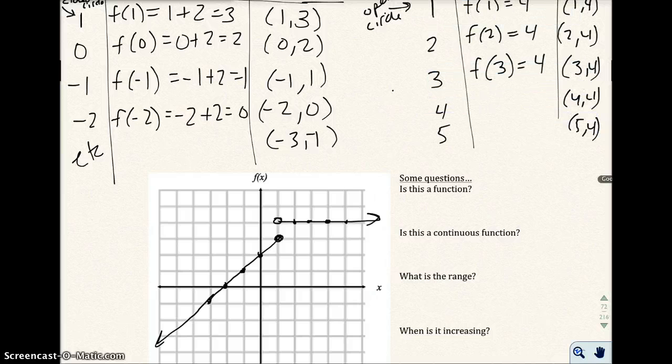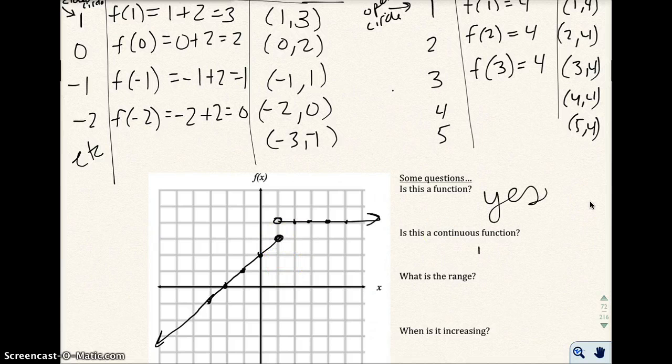Some questions here. Is this a function? And the answer is yes, because if I put a vertical line up and down, it never touches more than one point in the graph. Even at this line right here, it touches just this point right there. If it continues, the answer is no, because it actually does not continue right here.